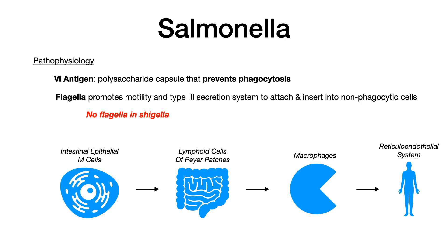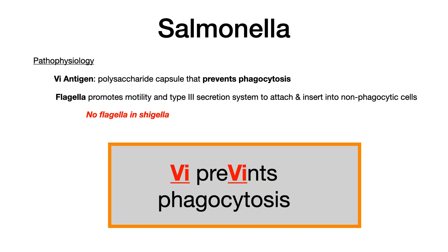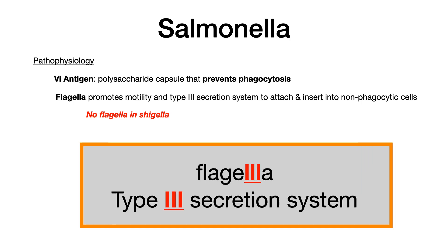This is all possible because of the endotoxin, the VI antigen, and the flagella and type 3 secretion system. The mnemonic: VI prevents phagocytosis — you can see 'VI' in 'prevents.' And for the flagella, remember flagella with three L's for type 3 secretion. If you can remember those two things, you know the pathophysiology of salmonella.